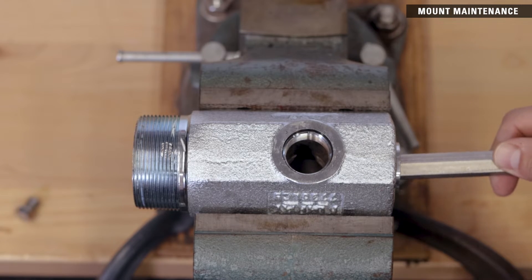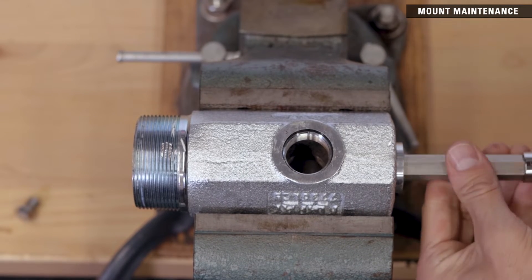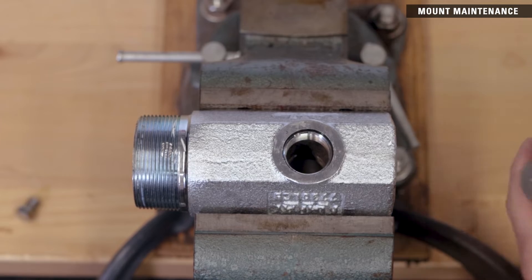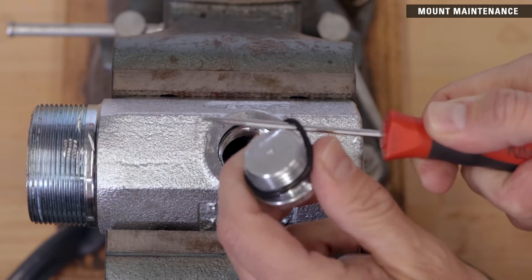Remove the access port socket plug from the end of the mount with a 1-1 hex wrench. Remove and discard the o-ring from the threads.